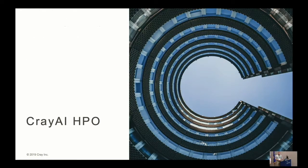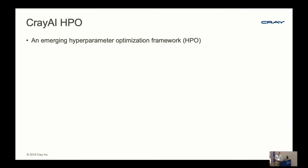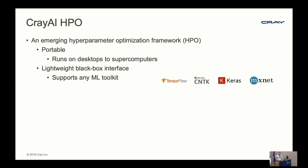Now I'm going to transition over to talking about Cray AI HPO—Cray's hyperparameter optimization framework. I call it an emerging hyperparameter optimization framework because it's still under active development; we're not at 1.0 yet. We consider ourselves in alpha release right now and are reserving the right to make breaking changes to the interface, which is actually happening right now. It's portable—it can run on your desktop up to a supercomputer. It has a lightweight black box interface.